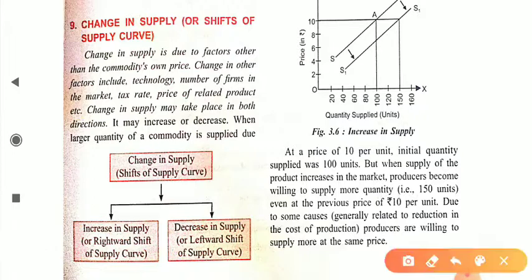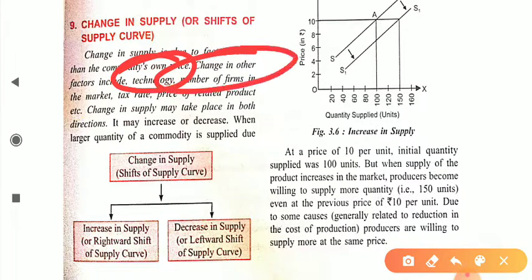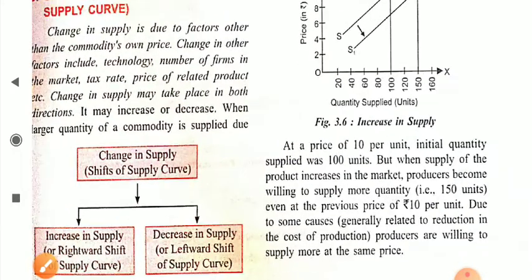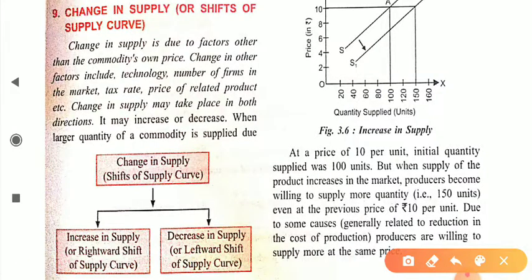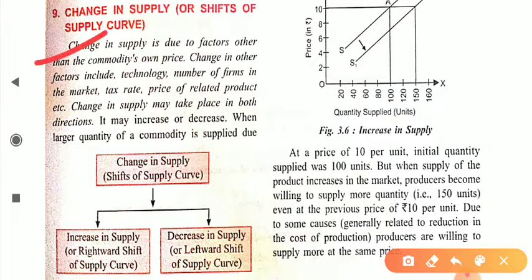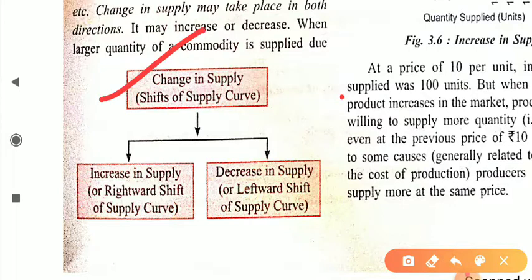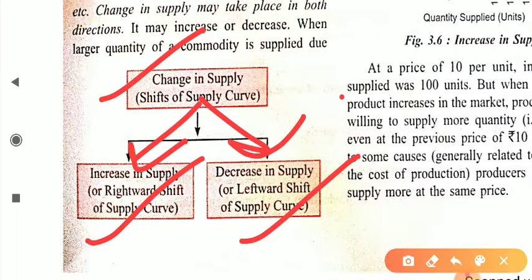All other factors — like technology, number of firms, tax rate, price of related commodities — change, either increasing or decreasing. Due to these factors, your supply curve shifts towards the right or left, which is known as increase in supply or decrease in supply. Change in supply is divided into two parts: rightward shift means increase in supply, and leftward shift means decrease in supply.